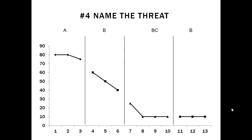Graph number four — name the threat. We've got data in the A phase at a high level, decelerating in the B phase, further decelerating in the C phase, and then stable and low in the final B phase. What we see in graph number four is a carryover effect — some threat where what's happening in the previous condition is contributing to a change in the next phase.